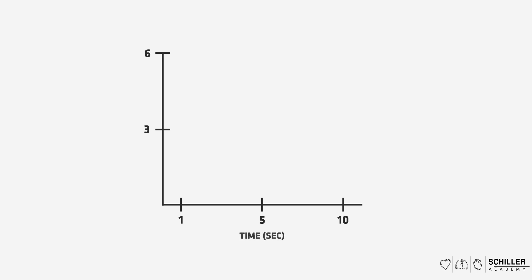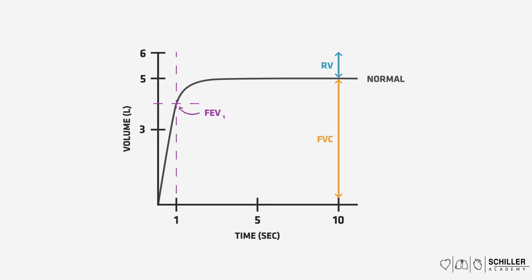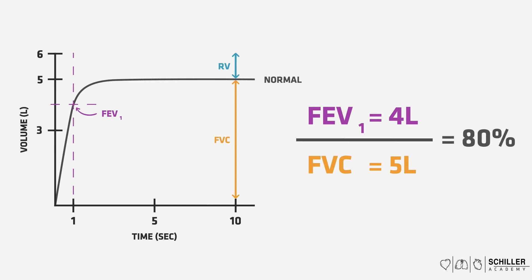Here, we are looking at time in seconds on the x-axis and volume of air in the lungs in liters on the y-axis. This is the volume of air expired by a normal adult man during a forced expiration after a maximum inspiration — which is the forced vital capacity, FVC — about 5 liters. The volume remaining in the lungs after a maximally forced expiration is the residual volume. The fraction of the vital capacity expired during the first second of a forced expiration is referred to as the forced expiratory volume, or FEV1. From the graph, FEV1 is 4 liters and the FVC is 5 liters, giving a ratio of 4 divided by 5, which is 0.8 or 80% — this is normal.